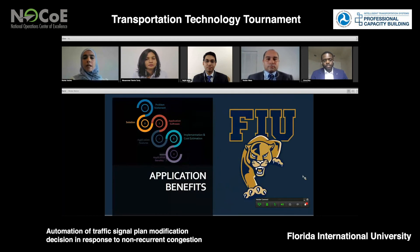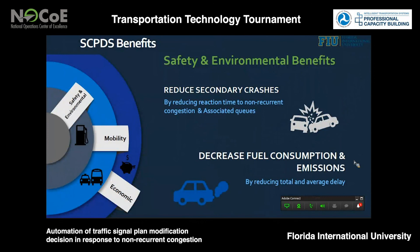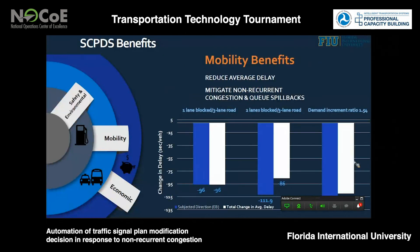Highlighting the benefits of this application: it will ensure a better and more efficient response to non-recurrent congestion, improving safety, mobility, and environmental conditions. By reducing reaction time to non-recurrent congestion and associated causes, especially accidents, it will reduce secondary crashes and improve safety. By reducing total and average delay, it will significantly decrease fuel consumption and emissions. As shown in the associated graph, the application significantly decreases delay per vehicle by an average of around 96 seconds per vehicle, and also mitigates non-recurrent congestion and acute spillbacks.